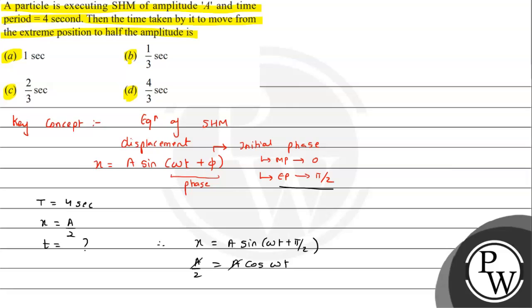From here we can say that ωt will be cos inverse of 1/2, which is π/3, that means 60 degrees basically. Now we can write ω as 2π/T times t, and that will be equal to π/3. So here π cancels. We can see the value of t is coming out to be T/6.